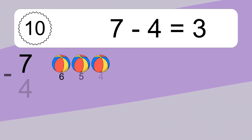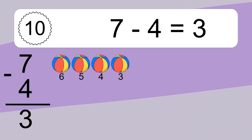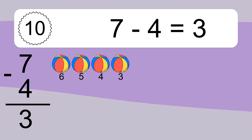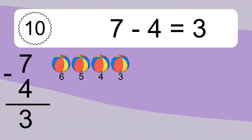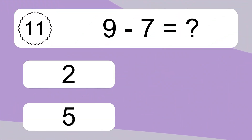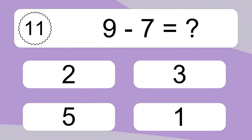7 minus 4 equals 3. Let's count it: 6, 5, 4, 3. 9 minus 7 equals what?